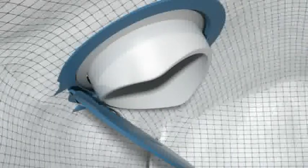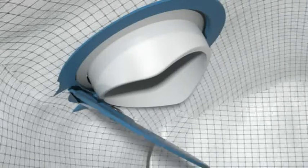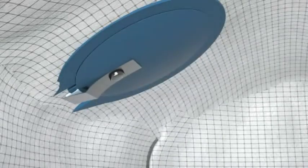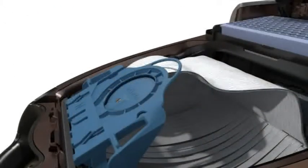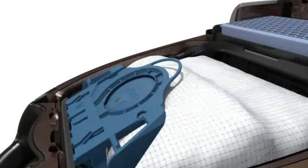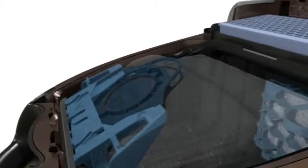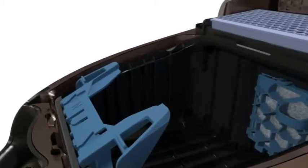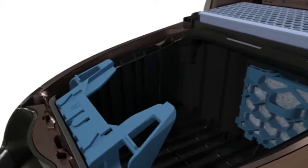Replacing the Miele AirClean Filter Bag is simple and hygienic. Because the filter bag self-seals on removal, dust and bacteria are not re-released into the room and the dust compartment remains clean.